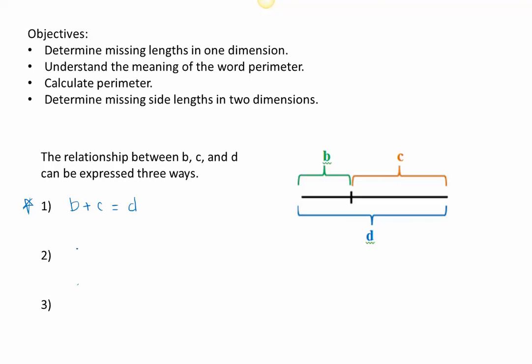We could look at the whole first and imagine what would happen if we took away one of the parts. For example, if we took away the part of size C, we would be left with a segment of length B. Of course, we can go the other direction as well. We can start with the whole, take away the side of length B, and be left with a segment of length C. Any one of these three will work to represent this situation. I just like version number one.